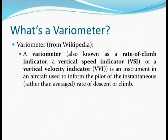What's a variometer? A variometer is also known as a rate of climb indicator, a vertical speed indicator, or a vertical velocity indicator. It's an instrument used in aircraft to inform the pilot of instantaneous rather than average rate of descent or climb.